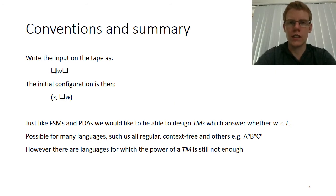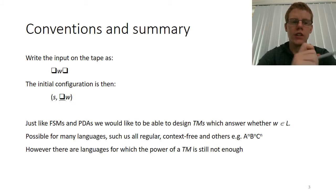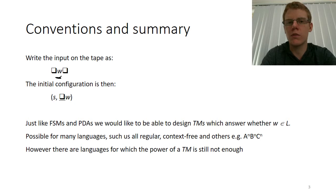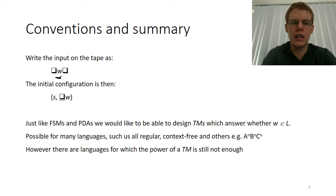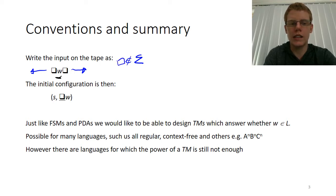We'll start with some conventions and then give a summary of what the next two videos are going to conclude. Our convention when we want to use a Turing machine to decide if a string is in a language will be to have the string on the tape before the Turing machine starts operating. Everything to the left and right of the string will be blanks. The input alphabet never contains a blank, so there are no blanks in string W.